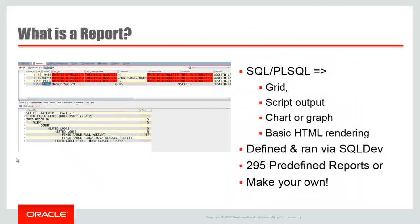So, what is a report? It's a collection of queries or anonymous blocks that are tied to a report. In that report, the data is going to be displayed either as a grid — like what you're used to seeing when you run a query — or it's going to come back as script output like you would see when you use F5, or what you'd be used to seeing in something like SQL Plus. We can also tie the data back to a chart or a graph, and we can also do some pretty basic HTML rendering in your reports, so you can make them look quite interesting.